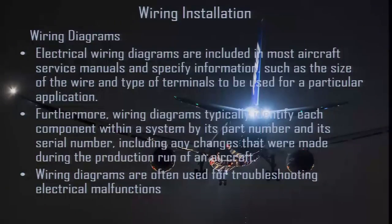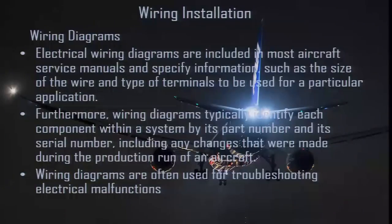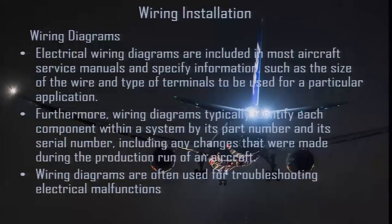Coming to the wiring part of the electrical system. Electrical wiring diagrams are included in most aircraft service manuals and specify information such as the size of the wire and type of terminals to be used for a particular application. Wiring diagrams identify each component within a system by its part number and serial number, including any changes made during the production run of an aircraft. These wiring diagrams are often used for troubleshooting snags in the electrical system.